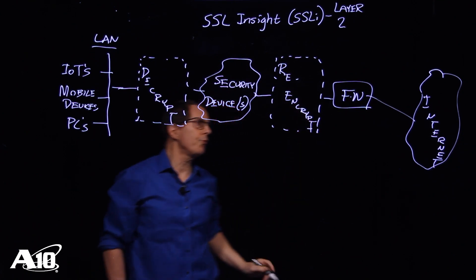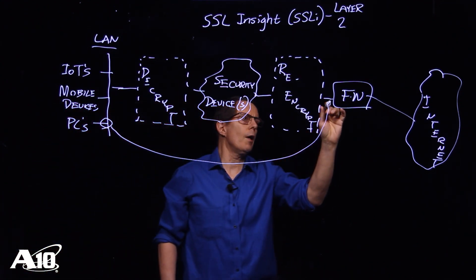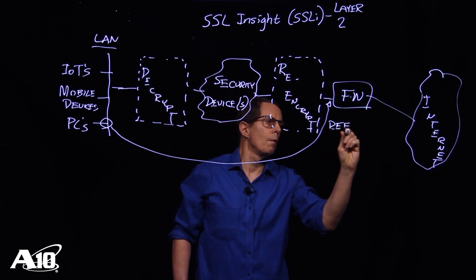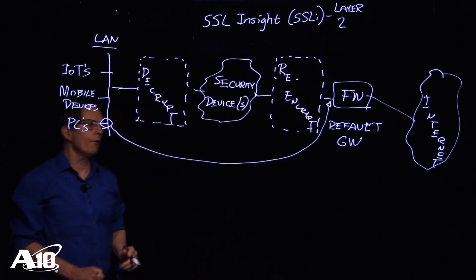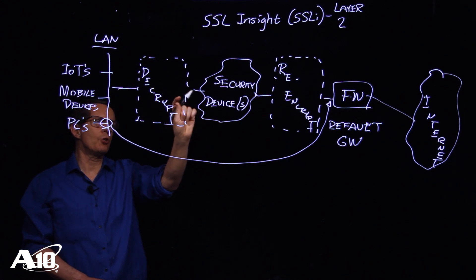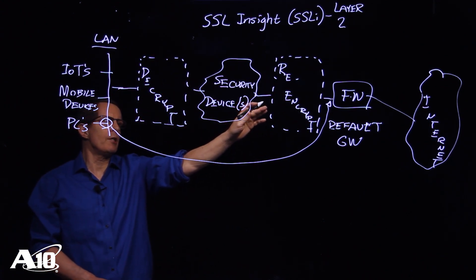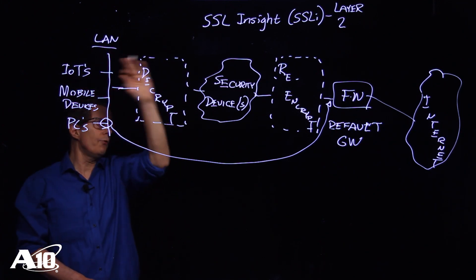Now the reason we say Layer 2 is because these PCs will have this firewall as their default gateway. And as their default gateway, the network team will be happy about that because they don't need to make any changes to re-IP anything, change configuration of the local area network devices.